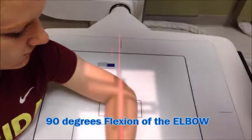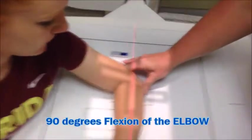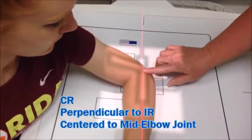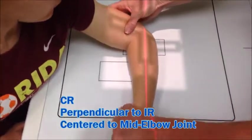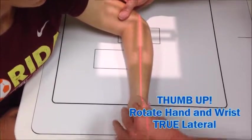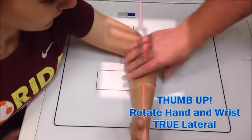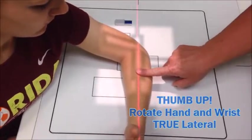The next view is the lateral view of the elbow. You need to have the elbow joint at the center of your central ray. You're going to have the patient put their thumb up. That way the ulna and the radius will be overlapping.